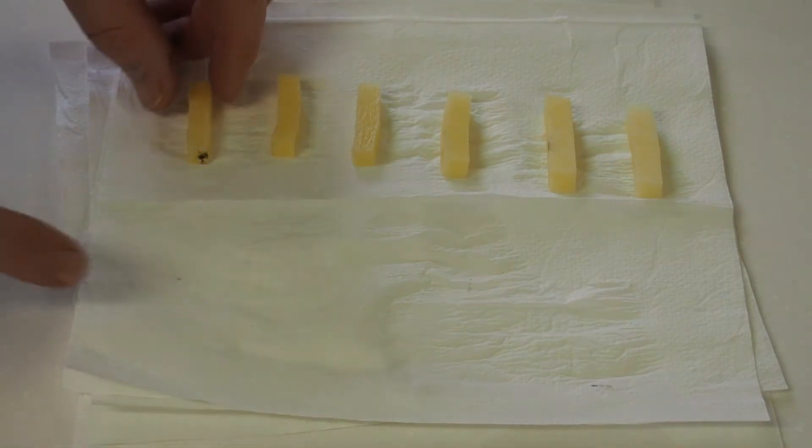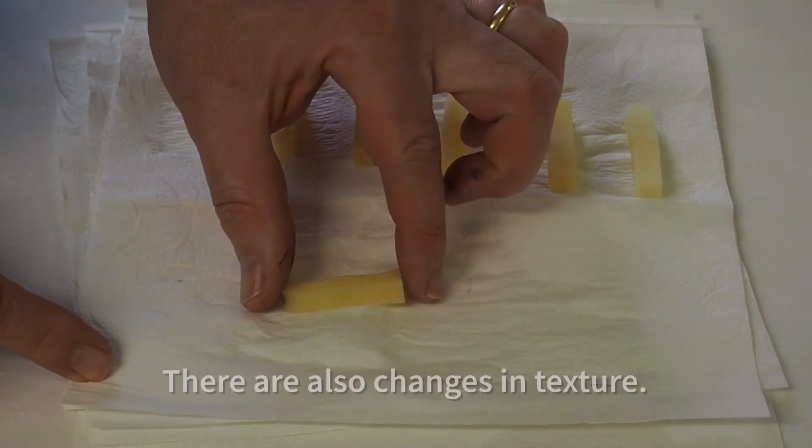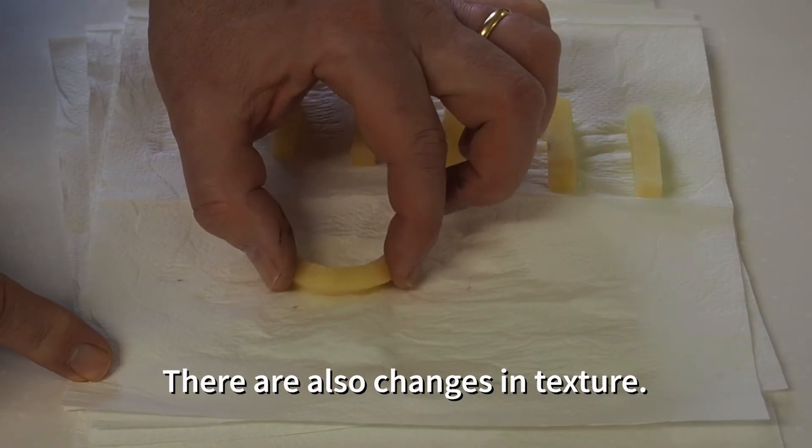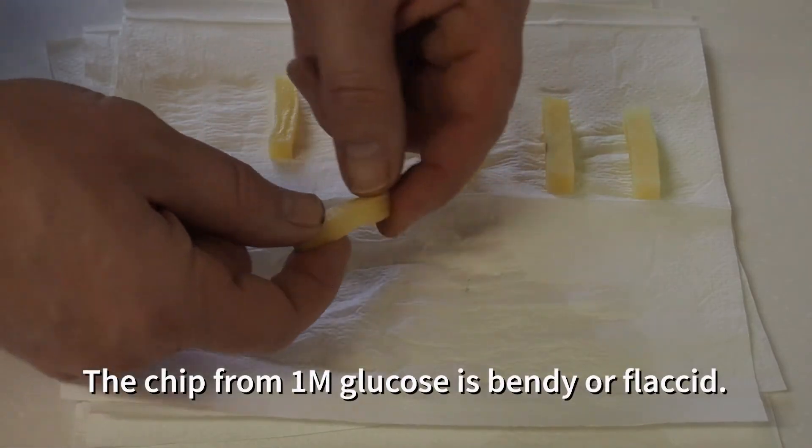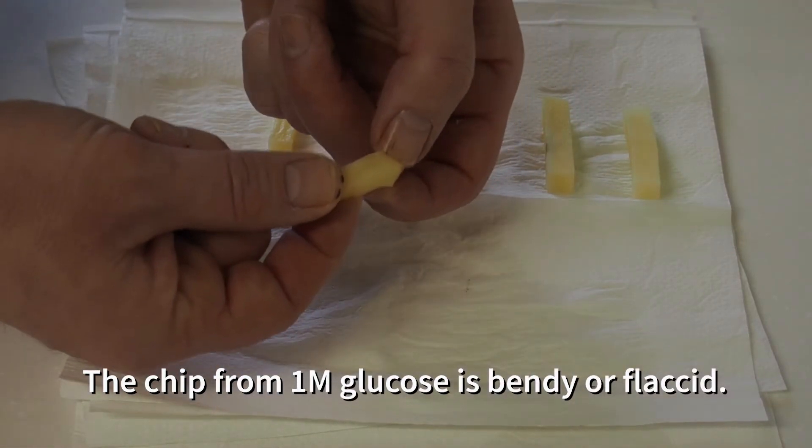As well as the measurable quantitative differences, there are also qualitative differences between the pieces. The piece from the concentrated glucose is very bendy in texture. You might describe it as being flaccid or floppy.